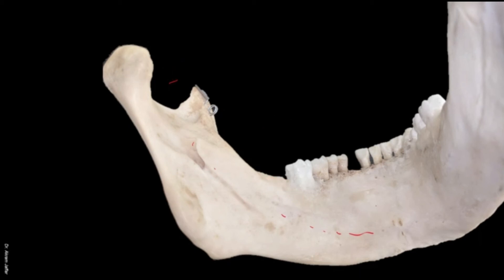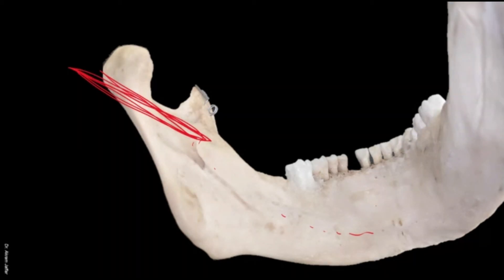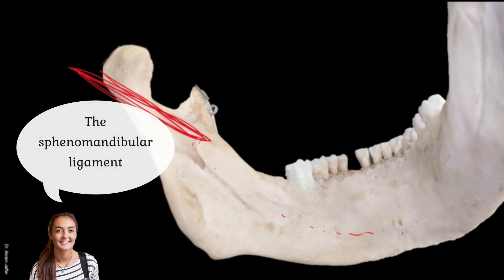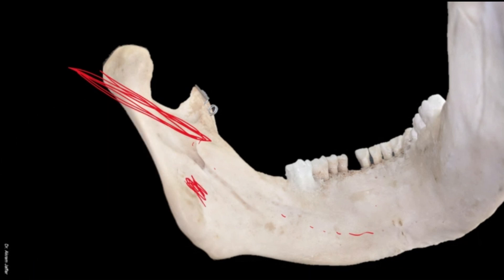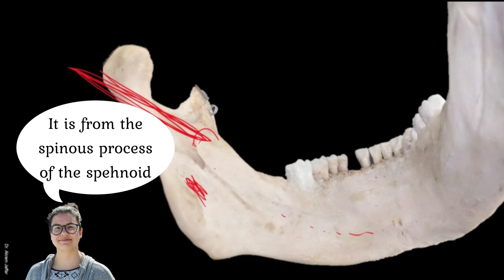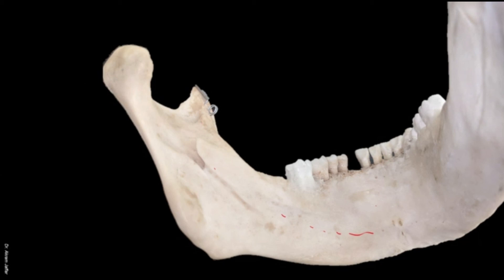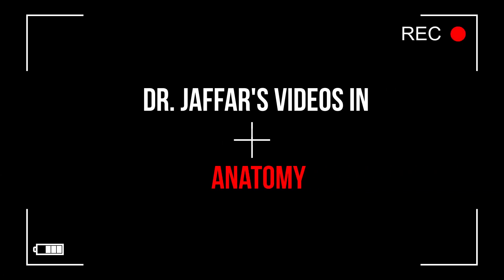This piece of bone is called the lingula. The question is which ligament is attached to the lingula — it is an accessory ligament of the temporomandibular joint. It is the sphenomandibular ligament, which runs from the spine of the sphenoid to the lingula. The other ligament is the stylomandibular ligament, attached elsewhere on the mandible.